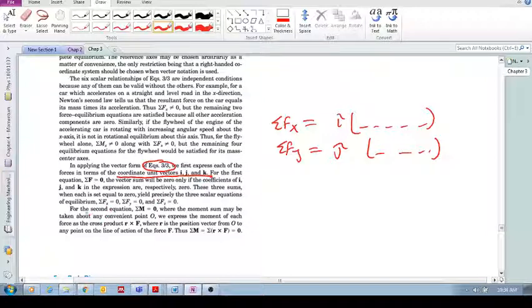For the moments, for the second equation, sum of the moments, again we express the forces in vector form, i's, j's and k's. But we also now need to use the cross product. So we need our position vector.